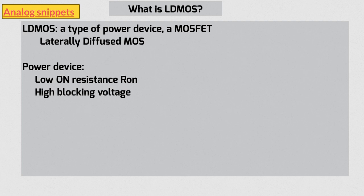Low on-resistance is achieved by having large device size. We'll have more to say about high blocking voltages in the rest of the video. There is a trade-off between the two properties. For a given area of the device, a high blocking voltage means sacrificing some of the Ron.